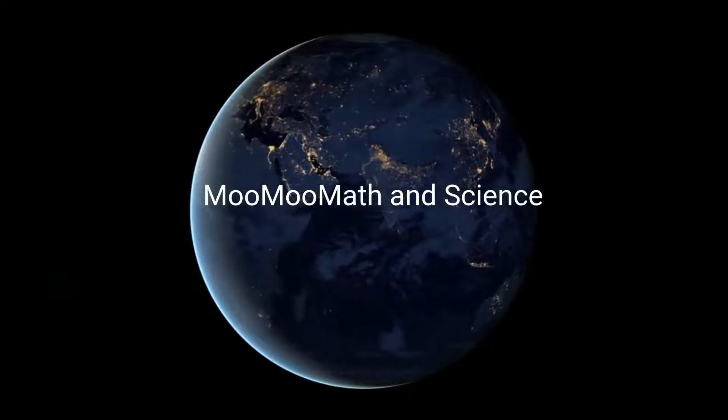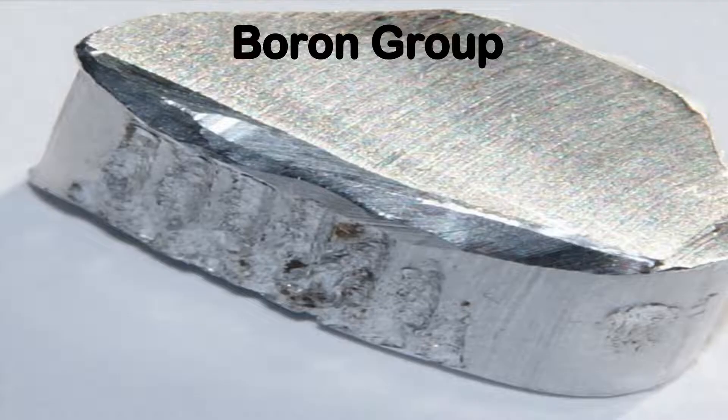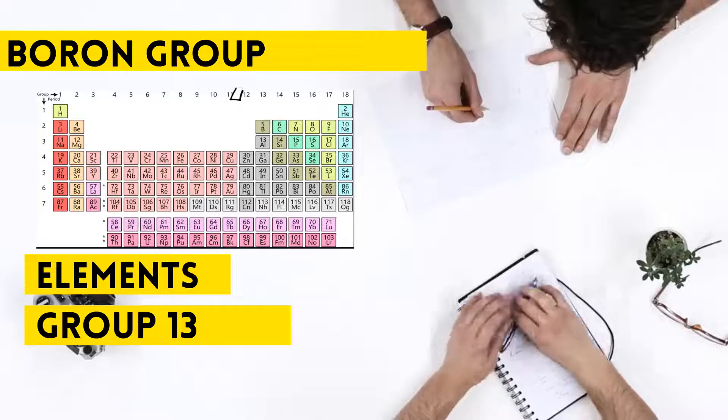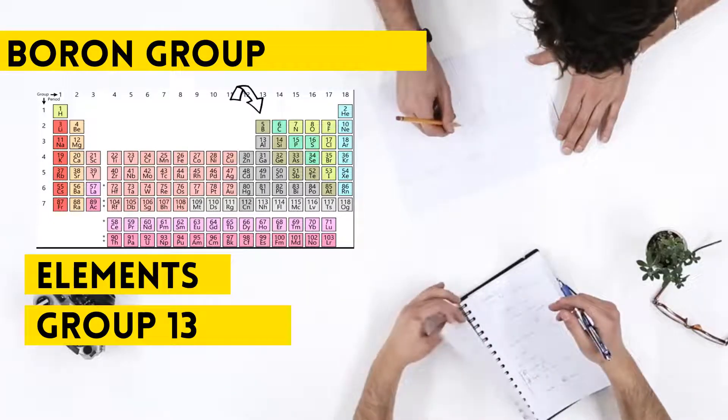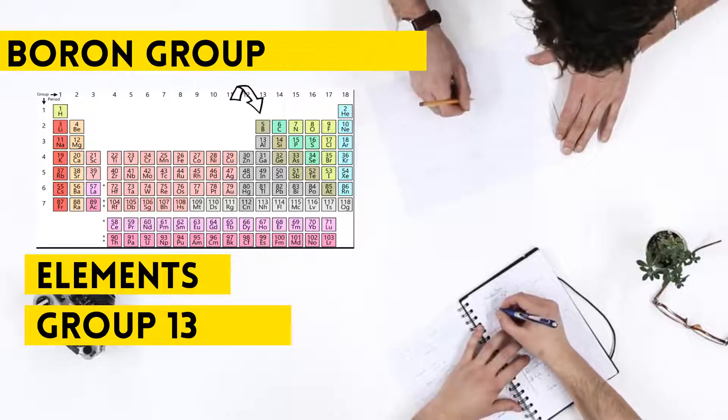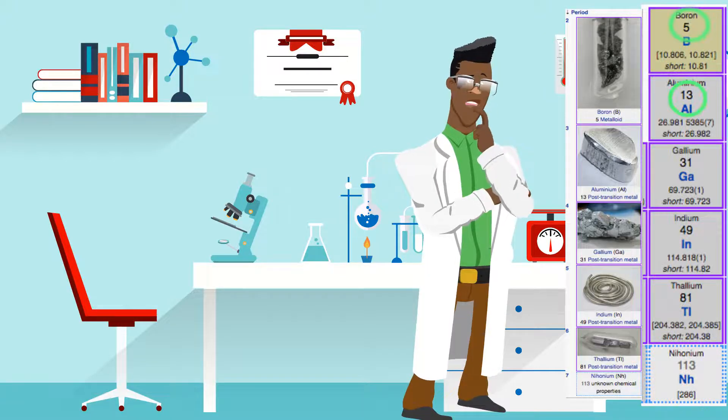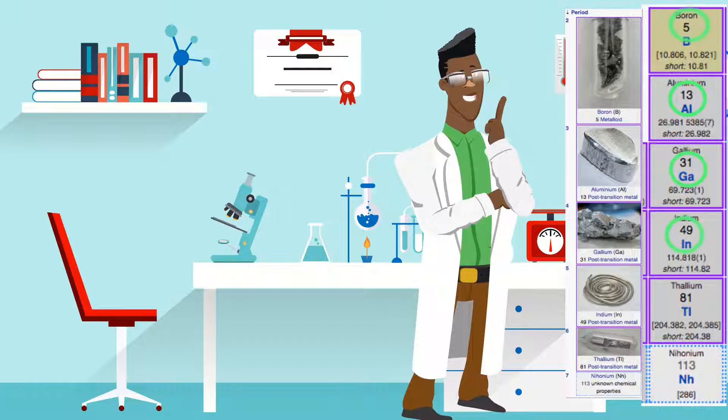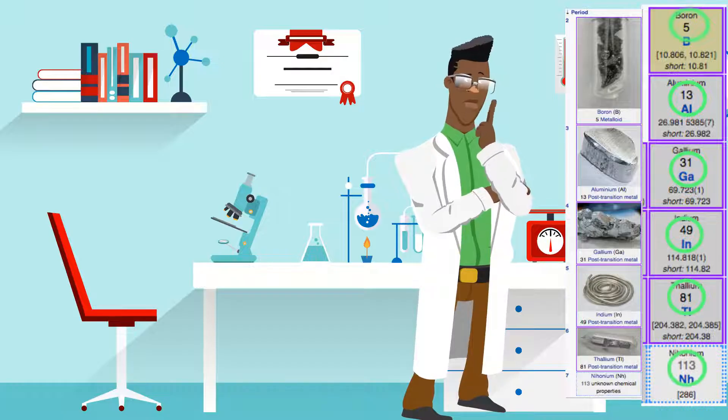Welcome to Moo Moo Math and Science. In this video, I'd like to talk about the Boron Group. The Boron Group are the elements found in Group 13 of the Periodic Table. They include Boron, Aluminum, Gallium, Indium, Thallium, and Nihonium.